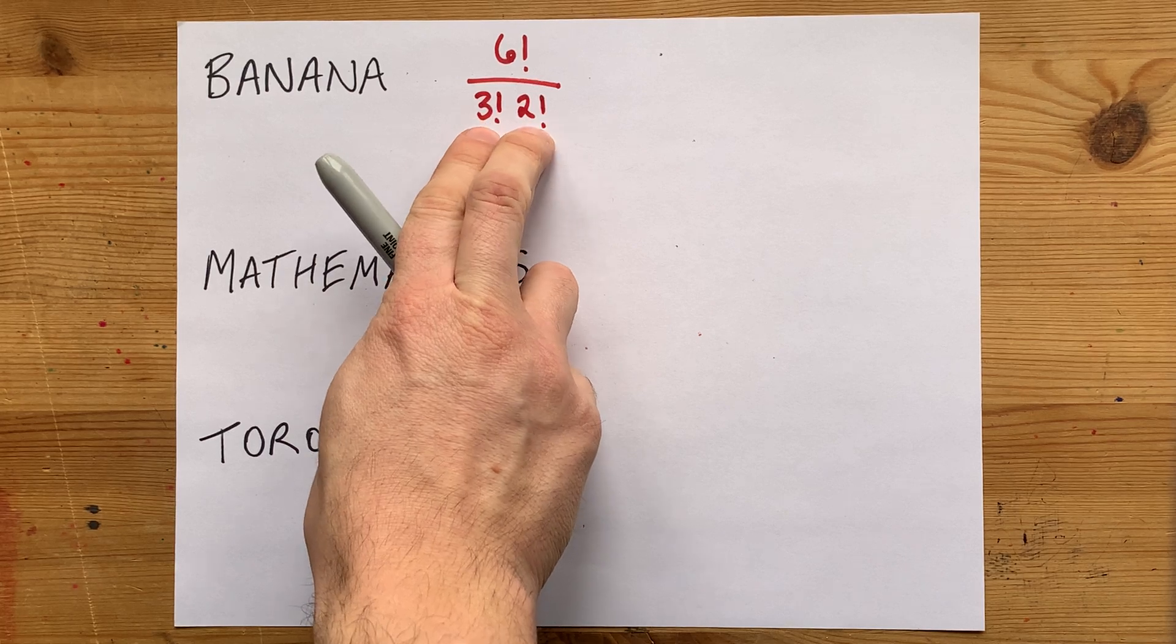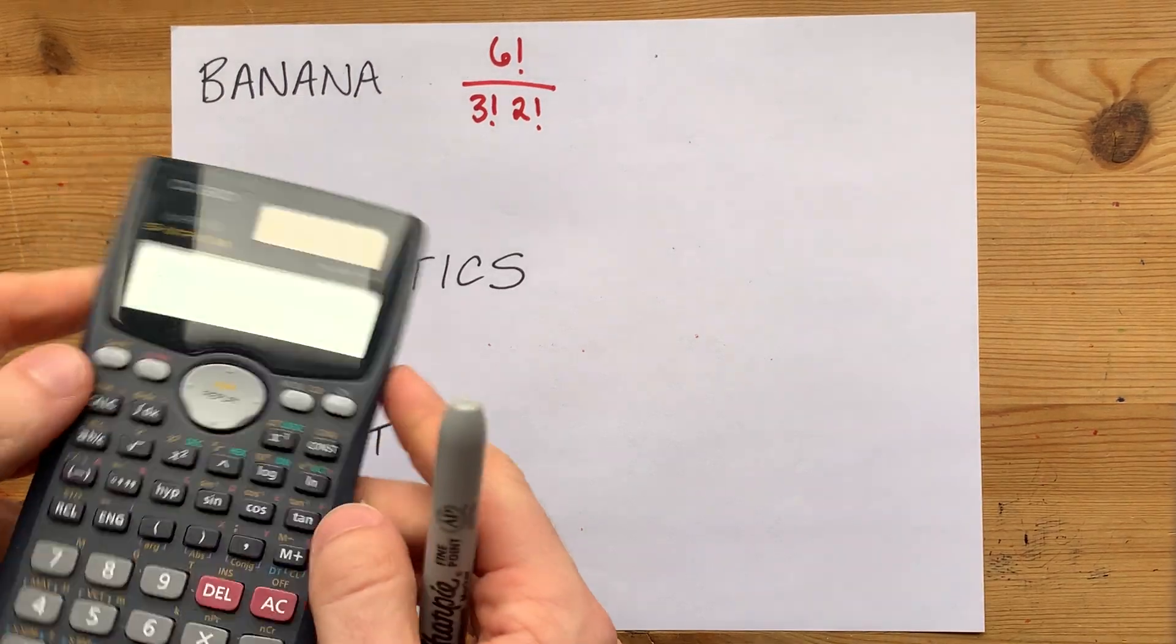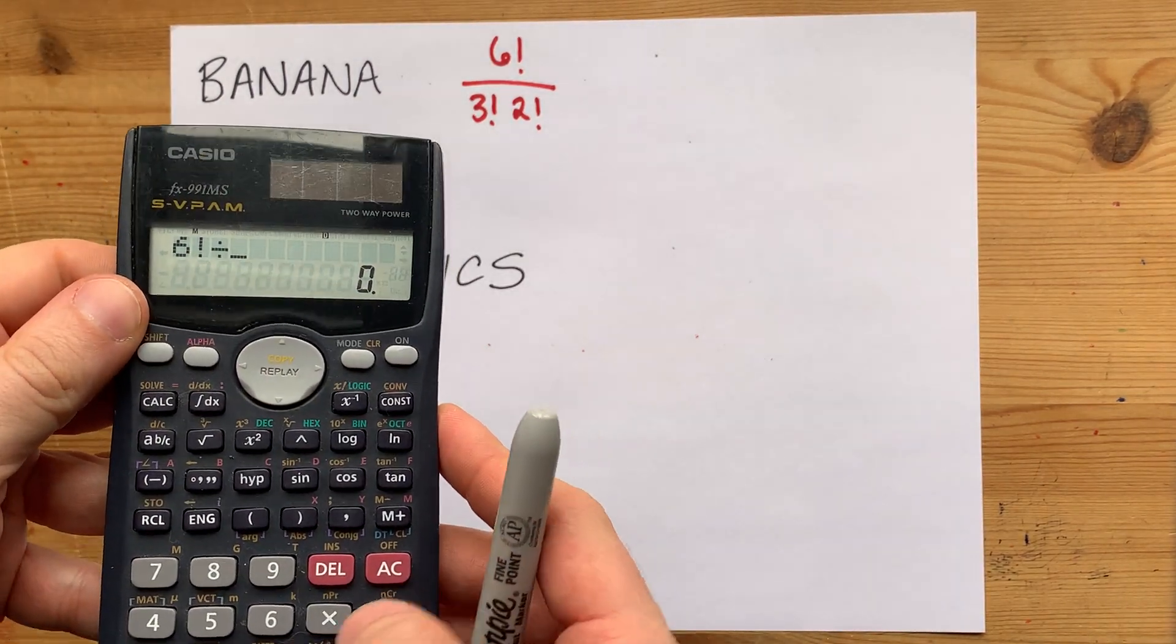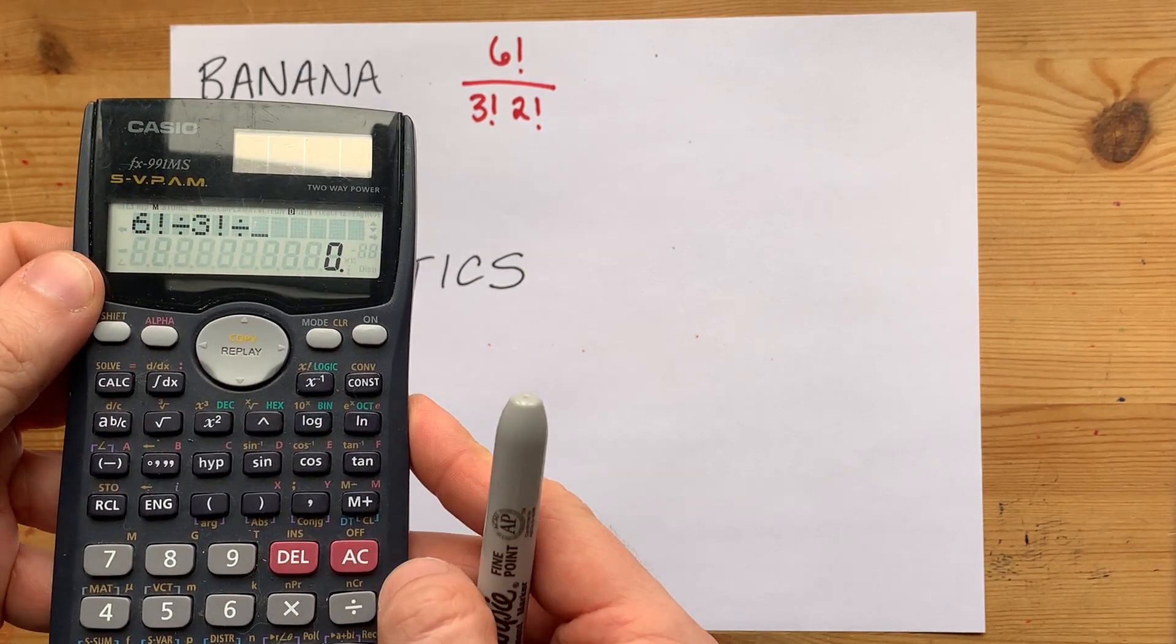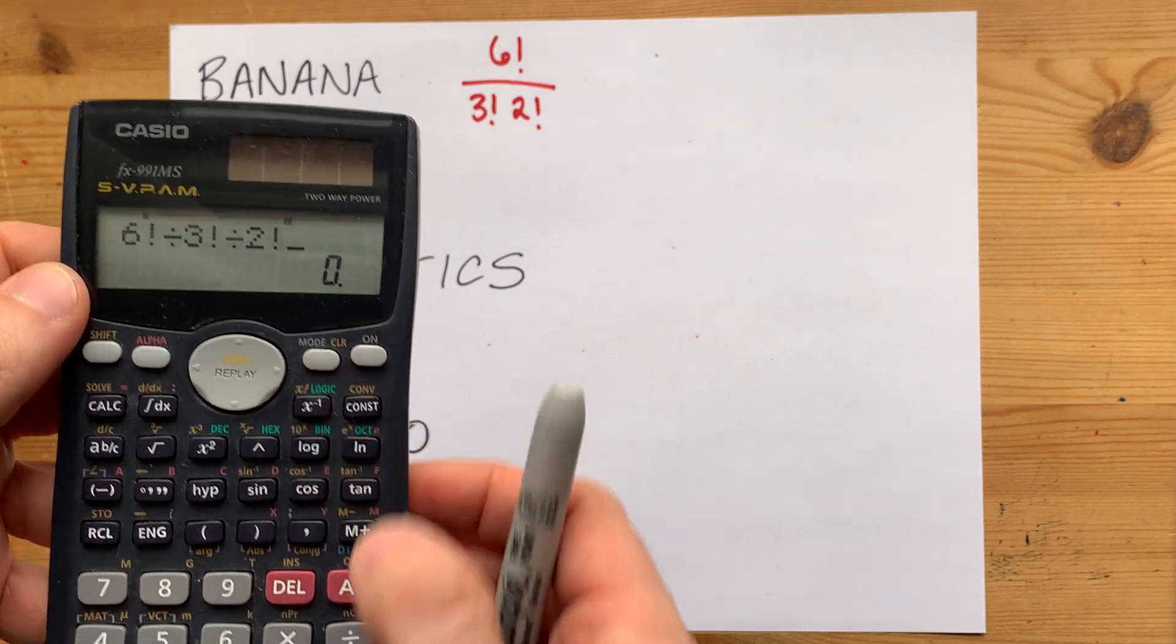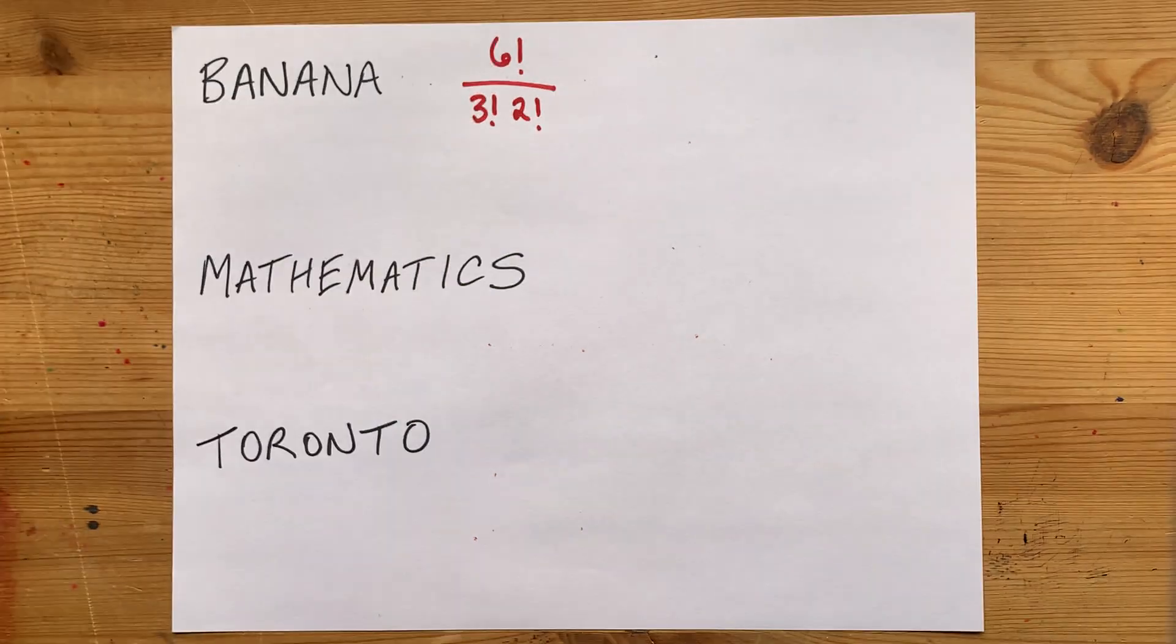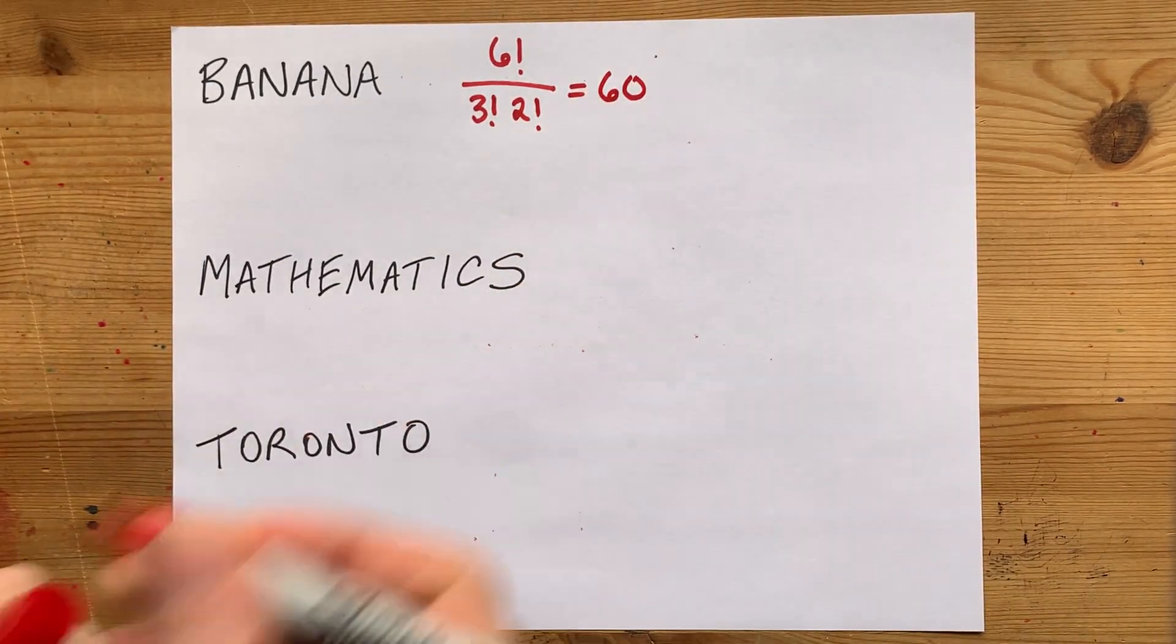These are multiplied together in the denominator before you divide, but the other way to do that on your calculator is to type the top six factorial, and you divide by three factorial for the A's, and then you divide again by two factorial for the N's. So when you have three A's, two N's, and a B, there's really only 60 ways to rearrange those six letters.